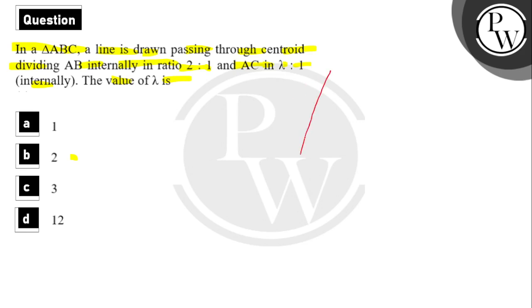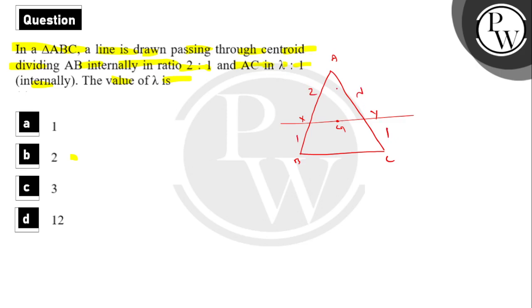Given that we have a triangle — let's suppose this triangle is ABC. The centroid G lies on the median. The median passing through G divides AB in ratio 2:1 and AC in ratio λ:1. The median is called AD, where D is the midpoint of BC. Let's take A as the origin.